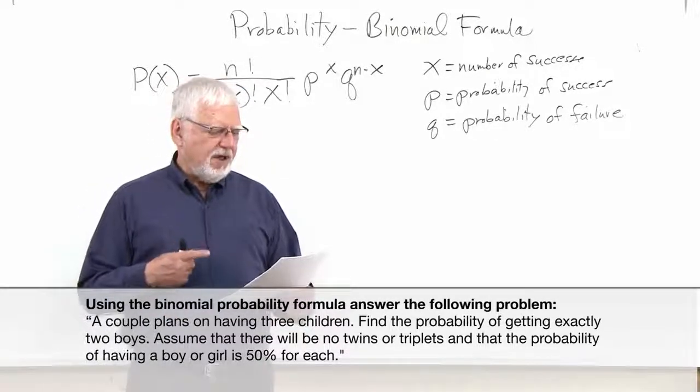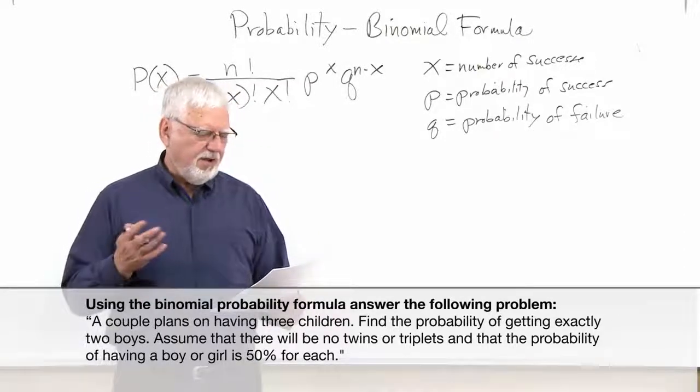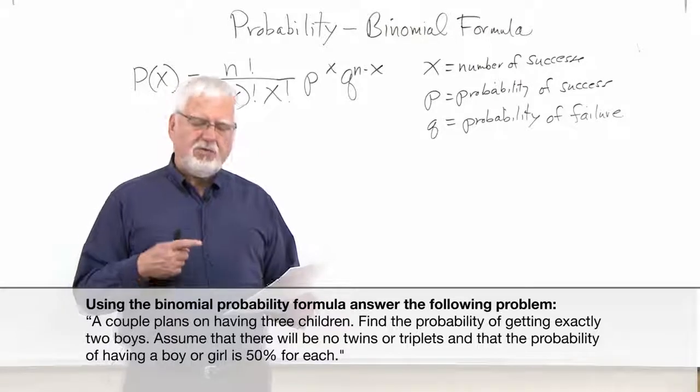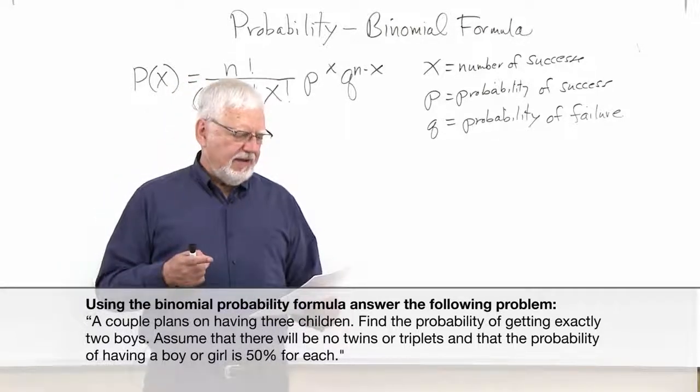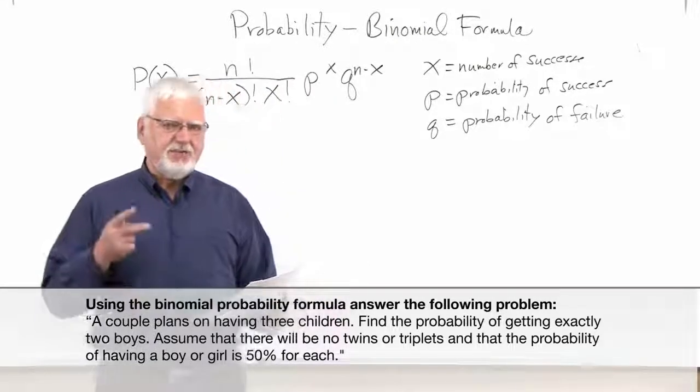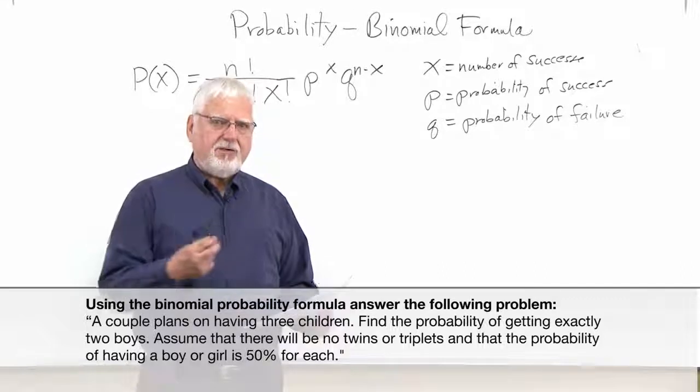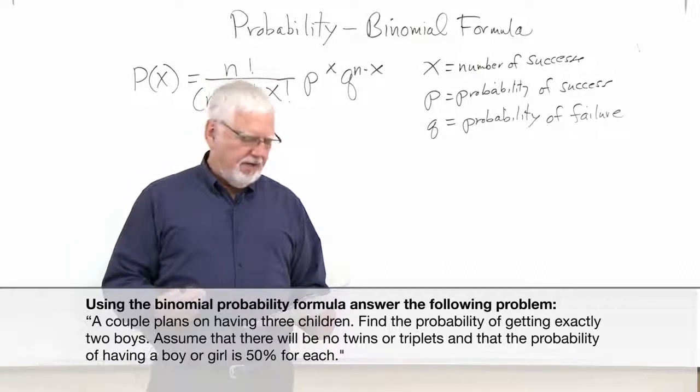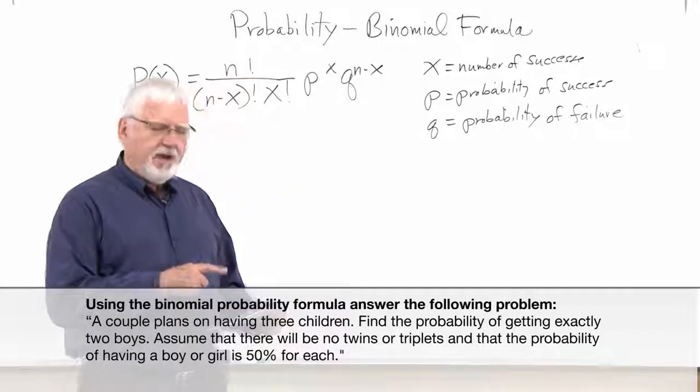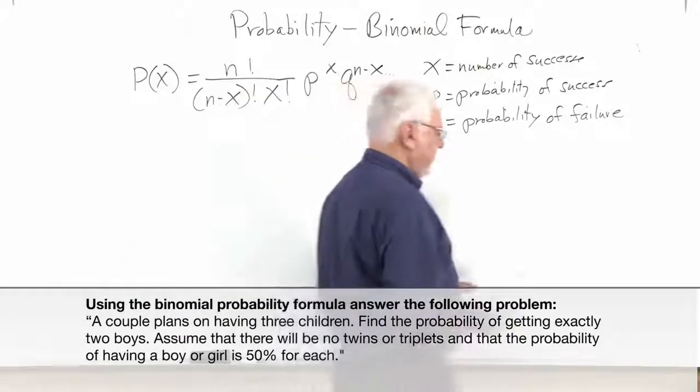A couple plans on having three children. Once again, the probability of getting a boy and a girl is exactly the same, and assume there's no twins or triplets. Now what we want to know is what's the probability of getting exactly two boys. We did this with a tree diagram, and now we're going to do it where we could actually see the number, although we didn't call it probability then. Now we're going to find out the probability of getting two boys in this type of situation.